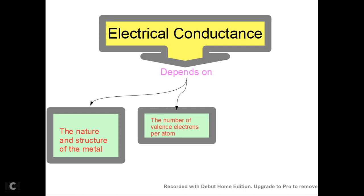What is the conductivity of metals? In a metal, there are free electrons. The electrons move in the direction of the electric field and are neutralized, producing current flow. The number of free electrons determines the electrical conductance of the metal.